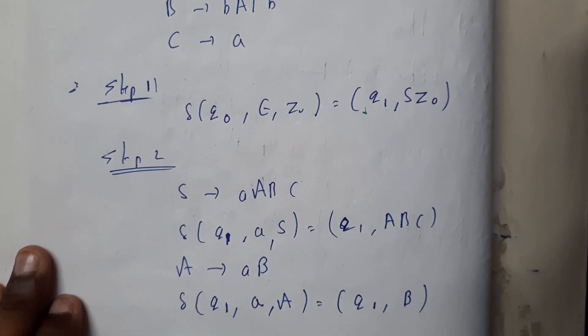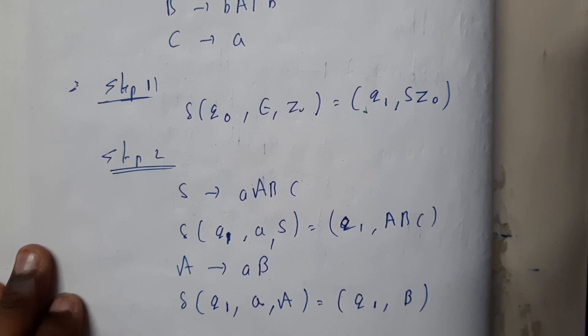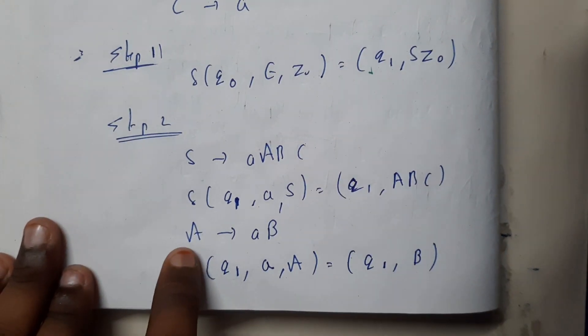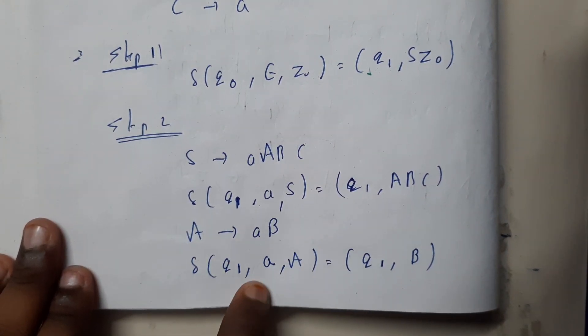Q1 on input small a comma S, as I told you the stack consists of S, equals to Q A B C will be pushed. Right? So similarly, A tends to a capital B on input a, we will be pushing b.